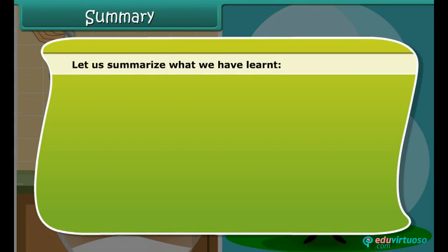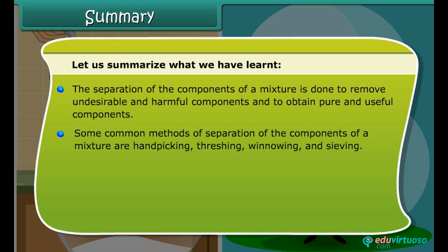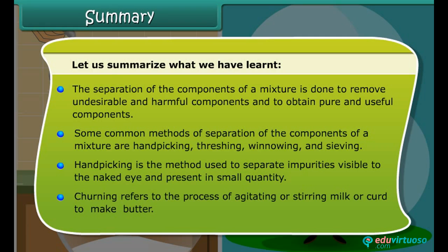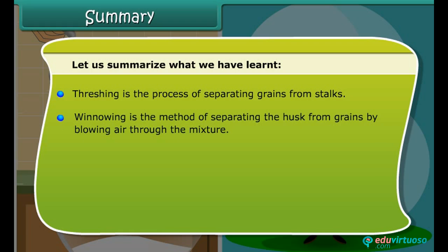Let us summarize what we have learned. The separation of the components of a mixture is done to remove undesirable and harmful components and to obtain pure and useful components. Some common methods of separation are hand-picking, threshing, winnowing and sieving. Hand-picking is used to separate impurities visible to the naked eye and present in small quantity. Churning refers to agitating or stirring milk or curd to make butter. Threshing is the process of separating grains from stalks. Winnowing is separating husk from grains by allowing air through the mixture. Sieving is the technique of using a sieve to separate solid particles of varying sizes.